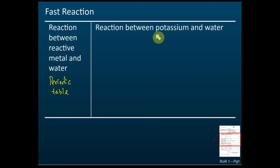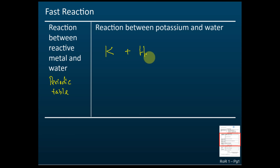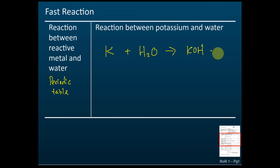Let's look at the example of potassium and water. The formula of potassium is K, and water is H₂O. When potassium reacts with water, the products are potassium hydroxide, KOH, and hydrogen gas is released. This is the chemical equation for this reaction.